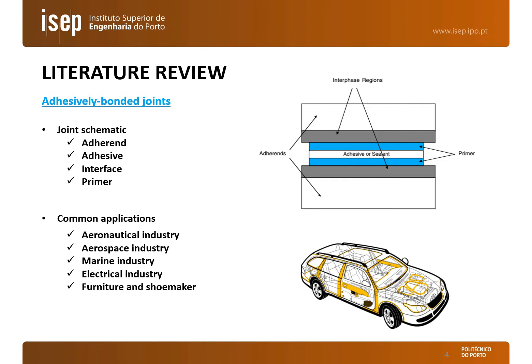By observing the upper picture, one may notice the components of an adhesive joint. The materials to be bonded are called substrates; however, after bonding, the term generally used is adherend. The region between the adhesive and the adherend is referred to as the interface. A primer, shown in blue, is a substance that is often applied on the substrate to improve adhesion or protect the surfaces until the adhesive or sealant application. This joint method is used in several fields such as aeronautic, aerospace, marine, and electric industries, and can also be found in simpler industries like furniture or shoemaking.